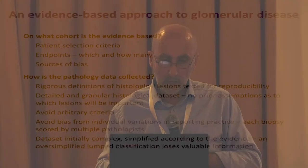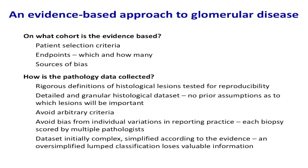When a classification is developed, it's important to consider the cohort on which the evidence has been based, and how the pathology data is collected. All sources of bias should be identified before selecting the cohort, including bias in reporting practices. It's the design of the study that led to the classification which is critically important.